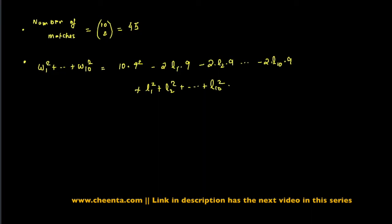Now I gave you a hint and asked you to think about what is the value of L1 plus L2 up to L10. Remember that L1 is the number of losses of the first team, and similarly L2 is the number of losses for the second team, and L10 is the number of losses for the 10th team.